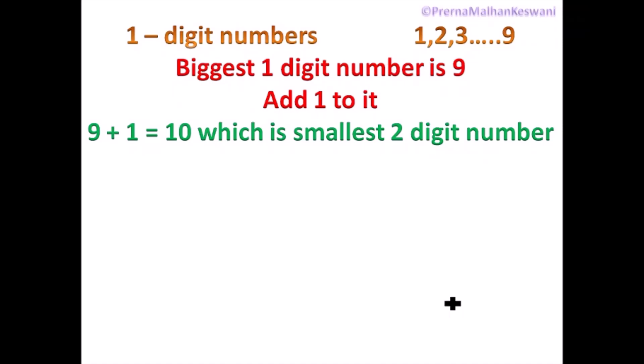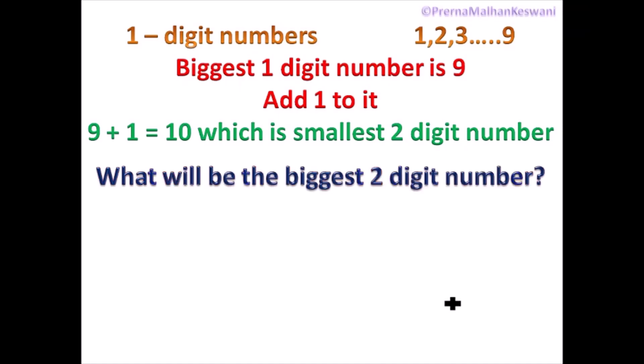Then all the two-digit numbers will start: 11, 12, 13, and it will go till the biggest two-digit number, which is 99. So the biggest two-digit number is 99.